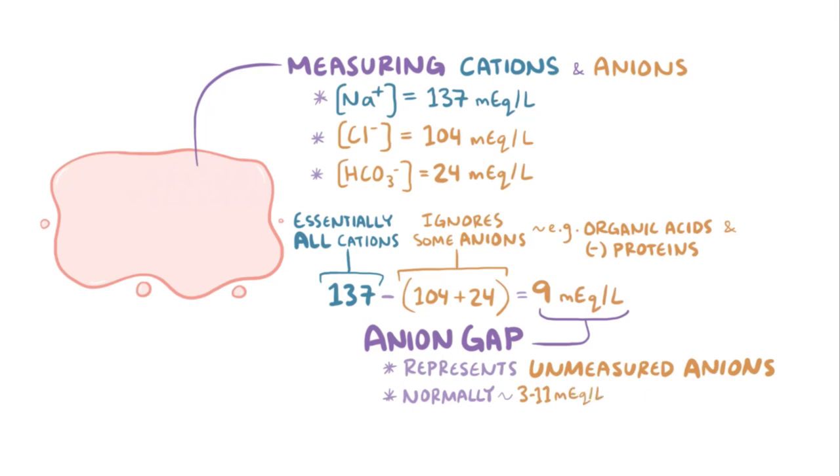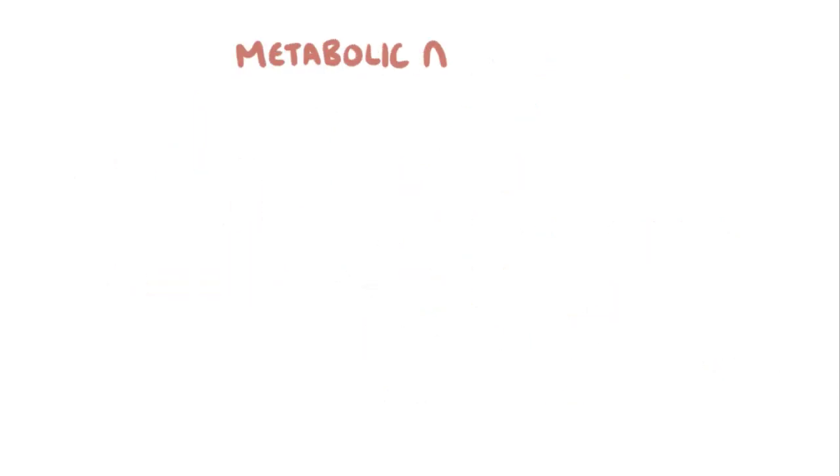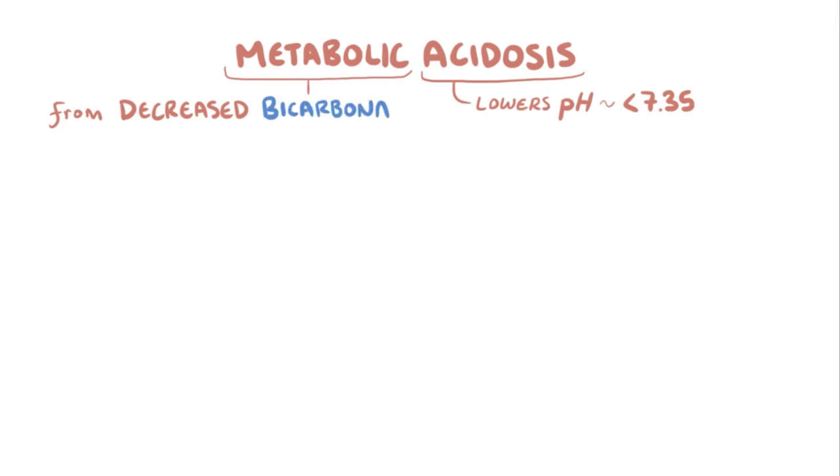If the anion gap is high, it's usually because there's a high amount of these unmeasured anions. Calculating the anion gap is a useful diagnostic tool, because it can help identify potential causes of metabolic acidosis. Acidosis refers to a process that lowers blood pH to less than 7.35, and metabolic refers to the fact that it's caused by a decrease in the concentration of bicarbonate ions.